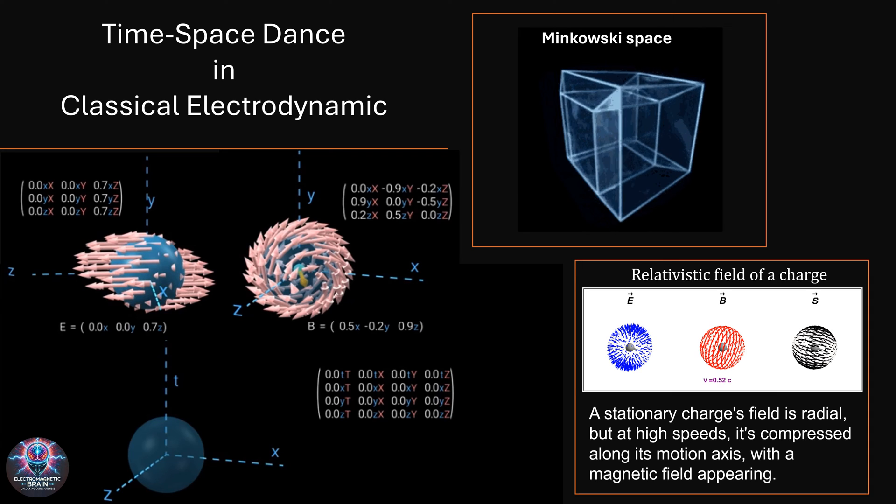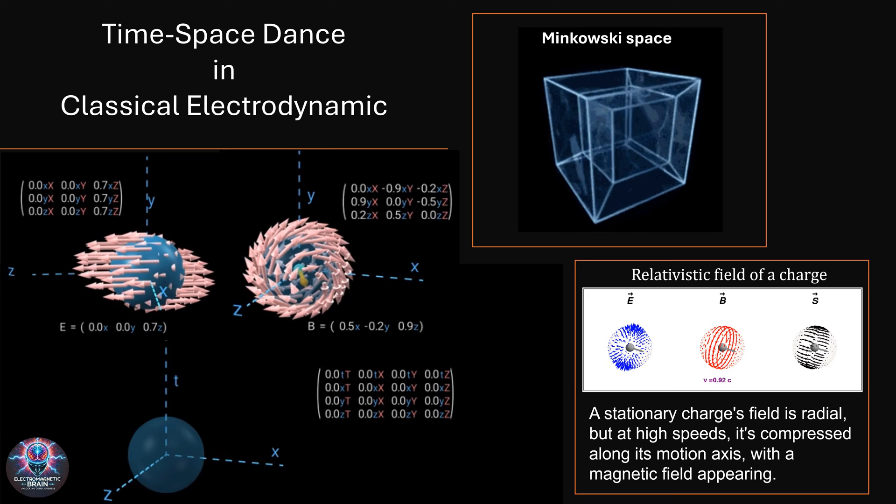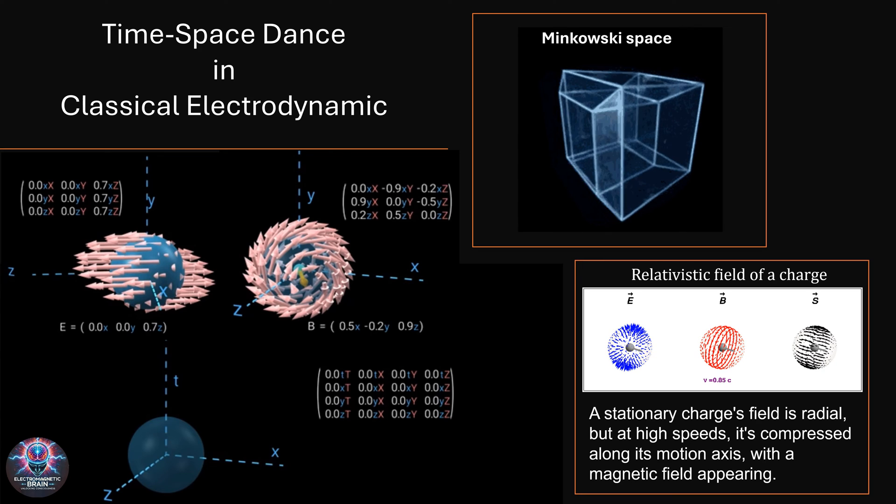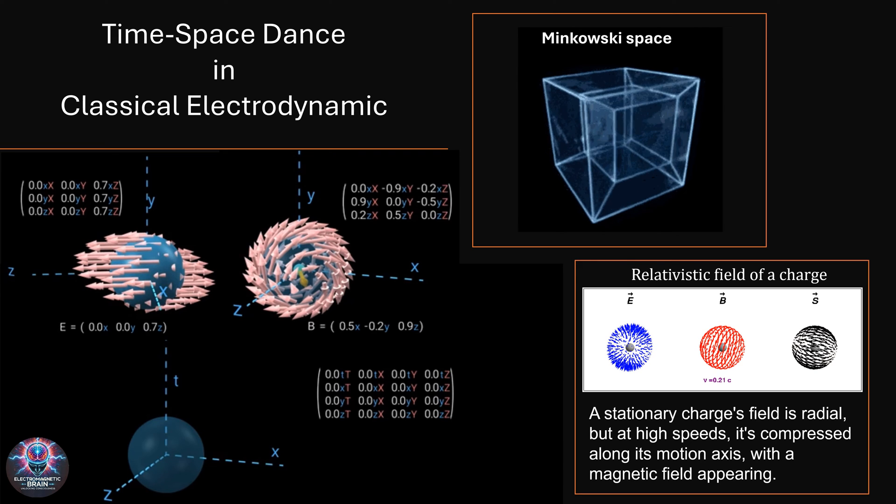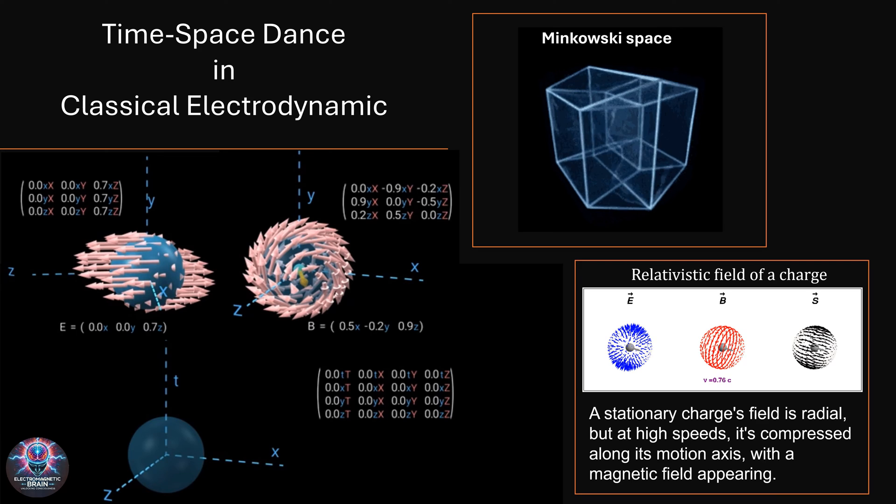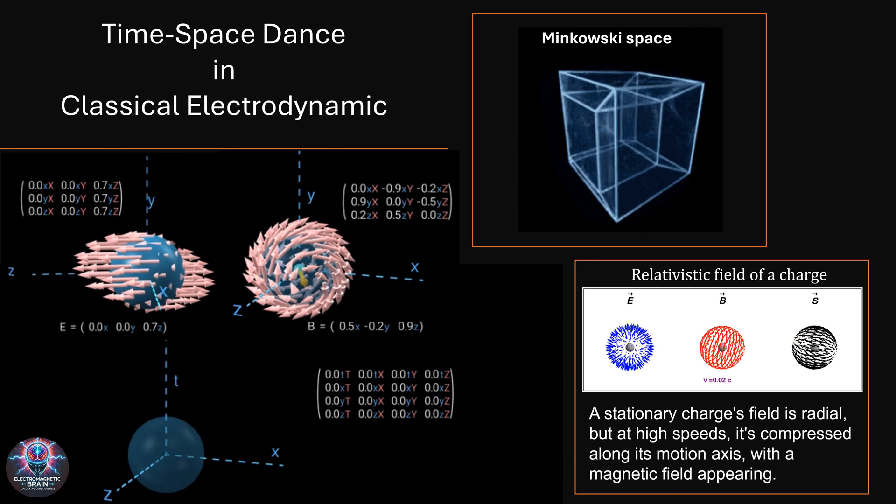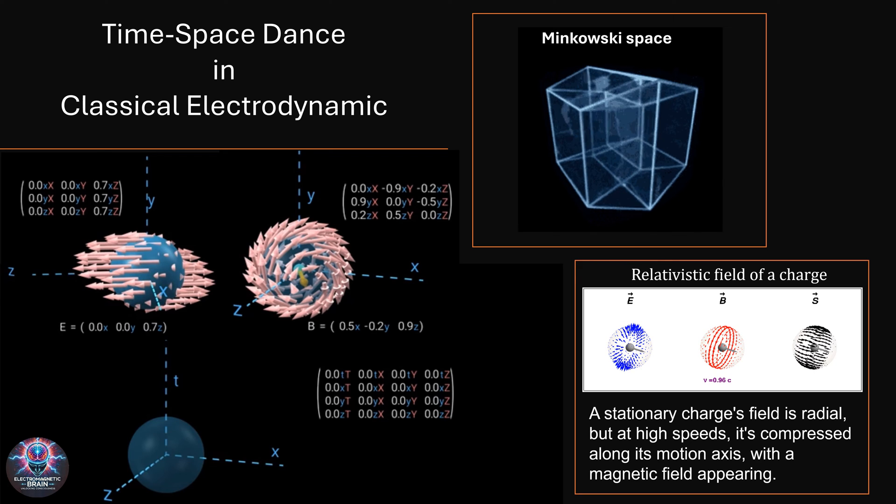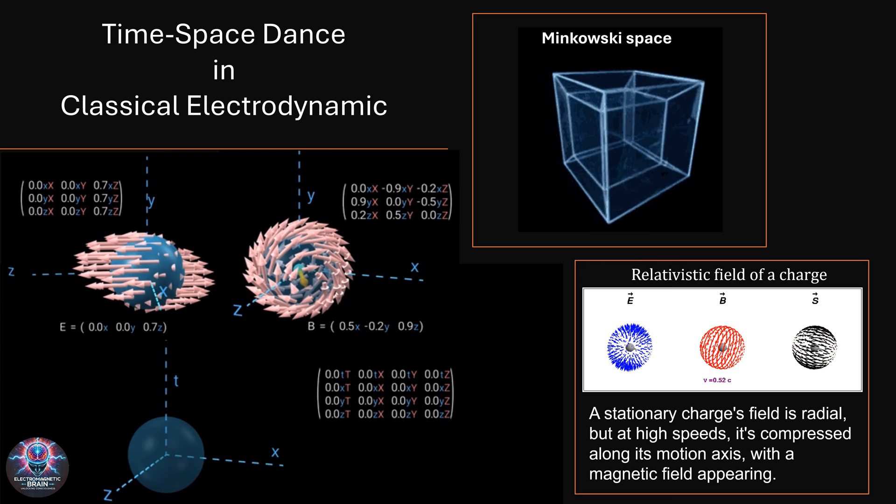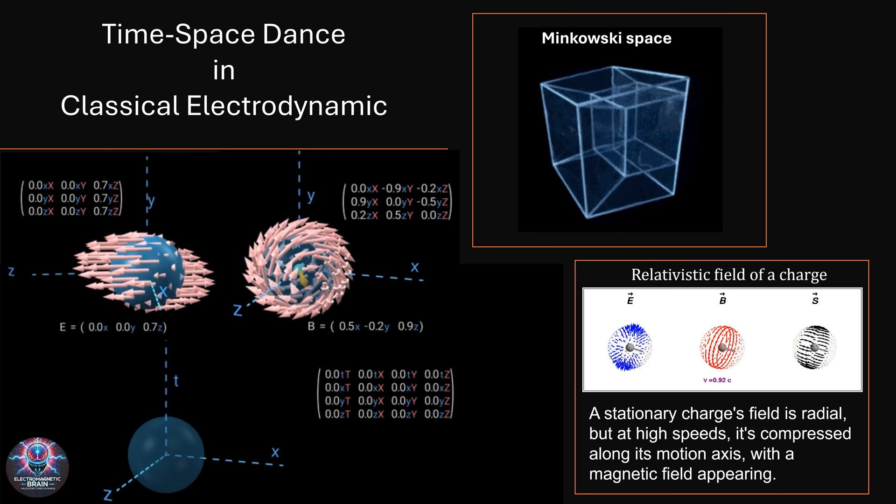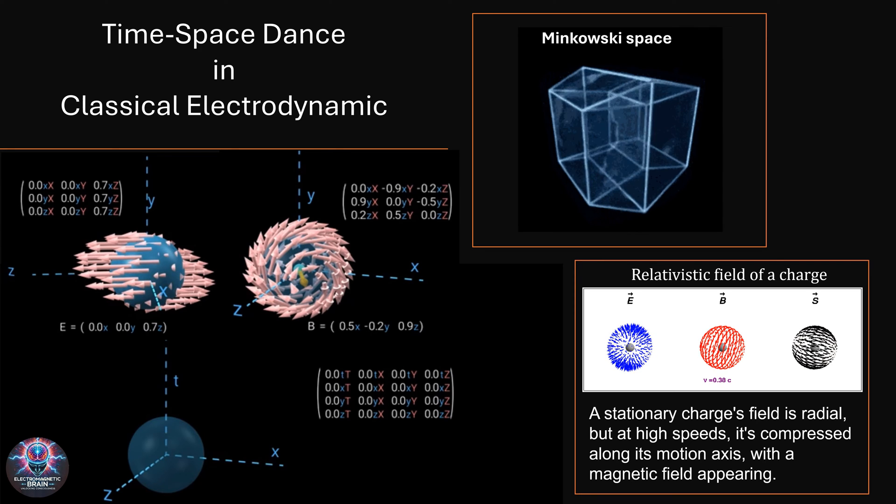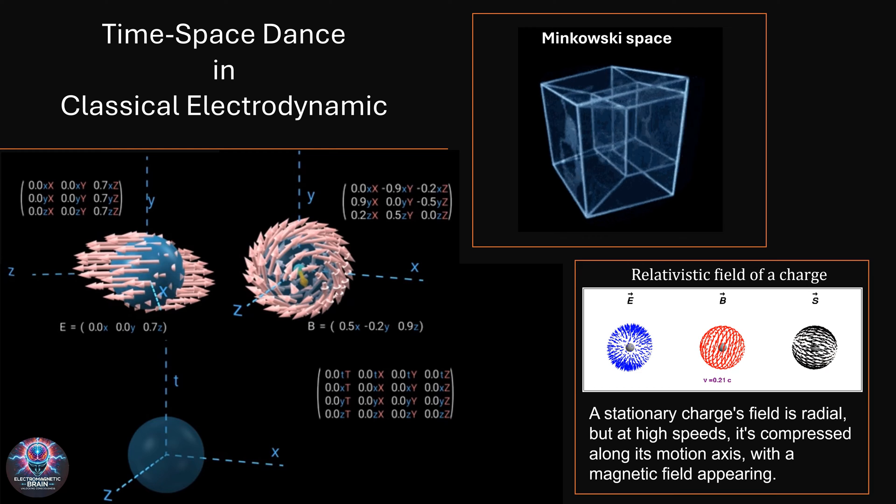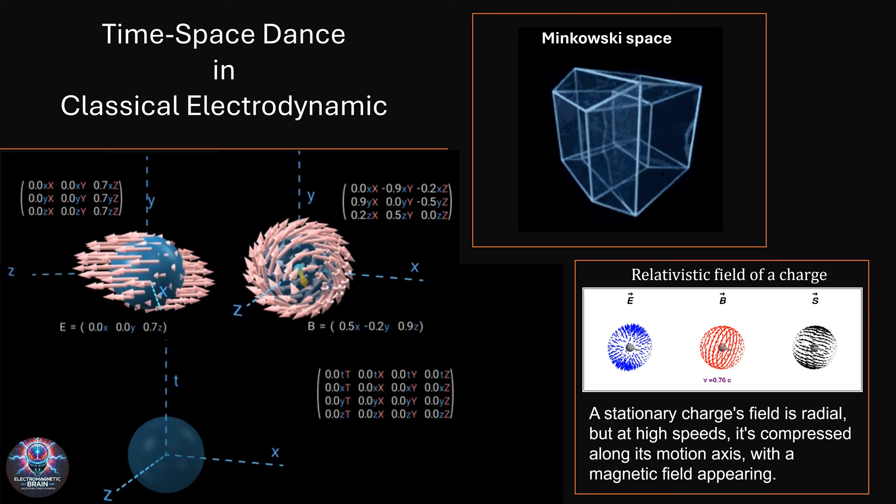This slide provides a compelling visual and mathematical representation of how electromagnetic fields transform in spacetime under special relativity, encapsulating what can be described as a time-space dance in classical electrodynamics. It explores how a charge's electric field, initially radial in its stationary state, undergoes relativistic transformation when the charge moves, leading to the emergence of a magnetic field and a spatial compression effect. The left side presents a detailed depiction of the electric E and magnetic B fields associated with a moving charge. The first diagram illustrates the electric field of a stationary charge, where the field lines are symmetrically radial. In contrast, the second diagram shows the relativistic transformation that occurs when the charge is in motion. The field lines contract along the direction of motion due to Lorentz contraction, and a circular magnetic field emerges, indicating that a moving electric field generates magnetism.